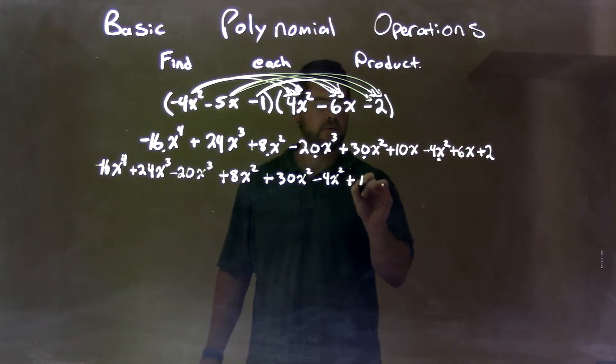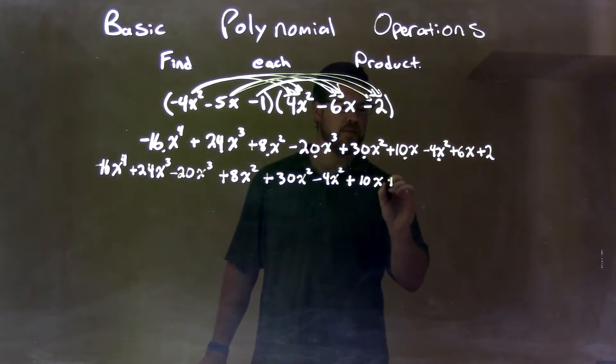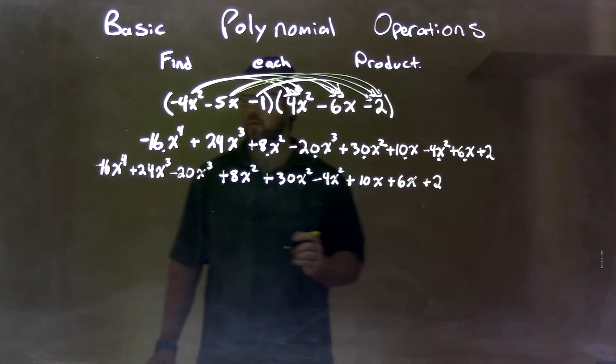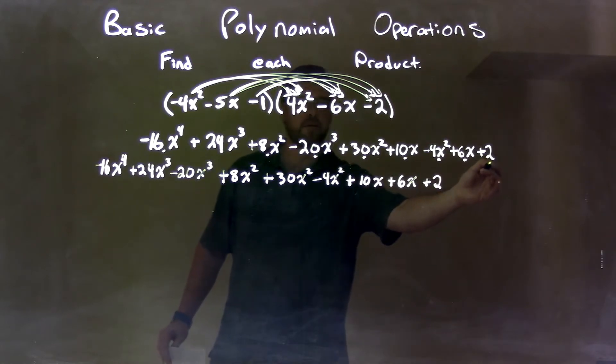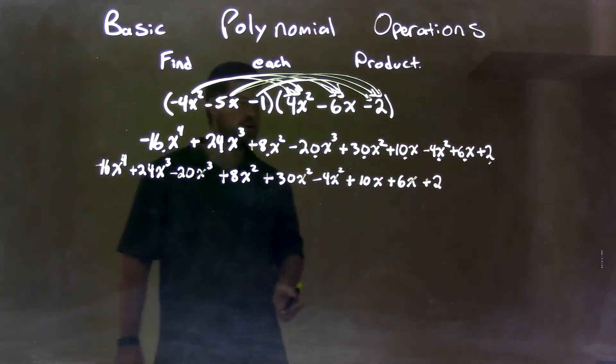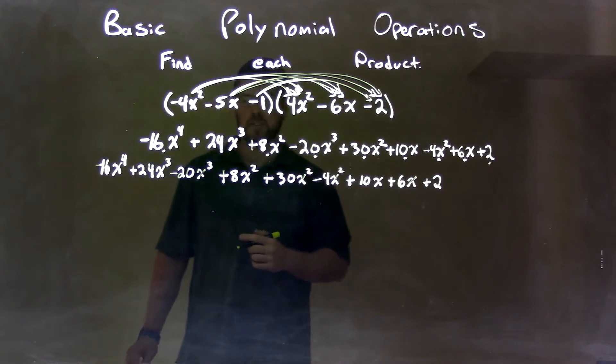Let's bring down the 6x and bring down the 2. So we should have everything down. Every dot should be under every single term. So now we can combine our like terms.